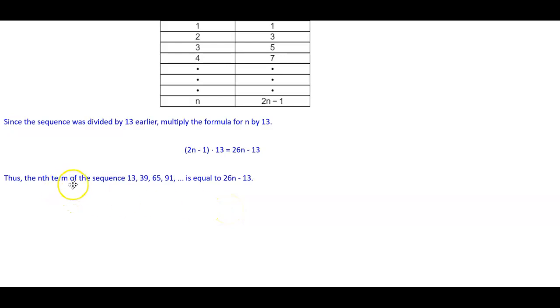Thus, the nth term of the sequence 13, 39, 65, 91 is equal to 26n minus 13.